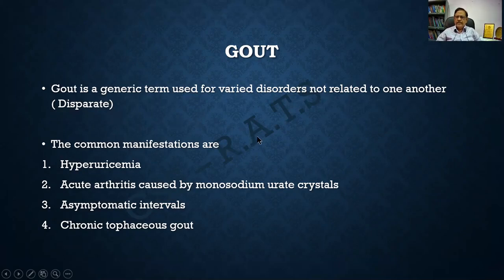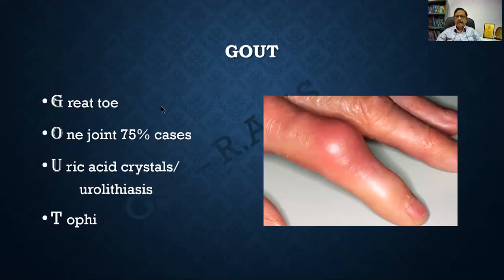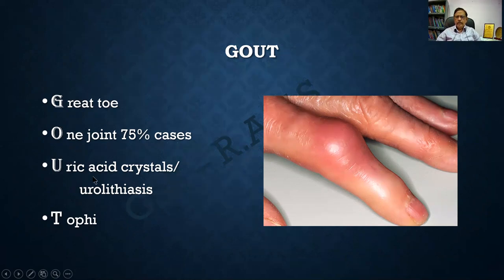The common manifestations in Gout are four things: one, hyperuricemia; two, acute arthritis; three, asymptomatic intervals between the attacks; and four, chronic tophaceous Gout. A mnemonic for GOUT: Great toe is the common bone affected, One joint is usually involved, Uric acid crystals and urolithiasis are the culprit, and Tophi is the lesion seen in chronic gout.